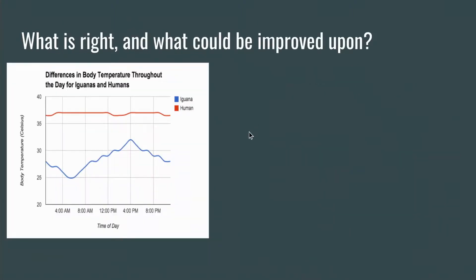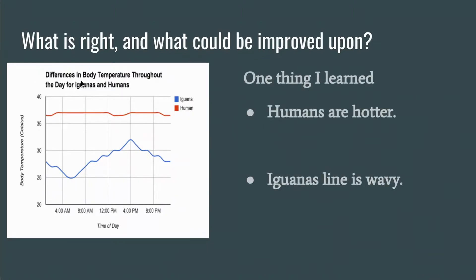So here's a second graph that we can look at for a level one response. The title of this graph is differences in body temperature throughout the day for iguanas and humans. The red line is body temperature for humans. The blue line is body temperature in iguanas. And then you can see if you move across the x-axis as you move towards the right, it's different times of day. That means the independent variable is the time of day.